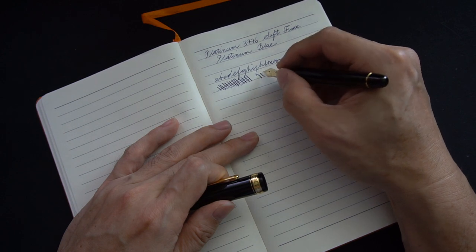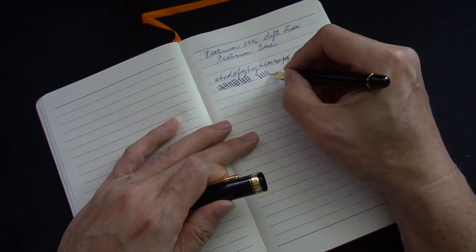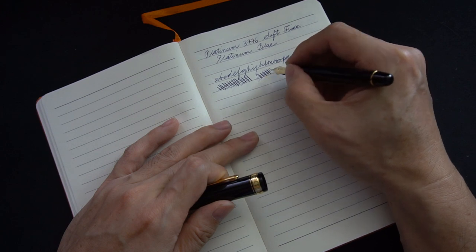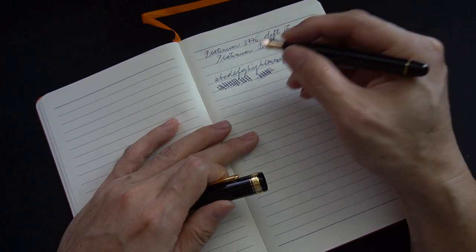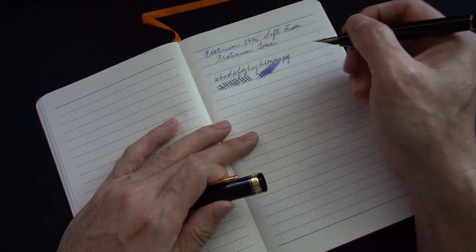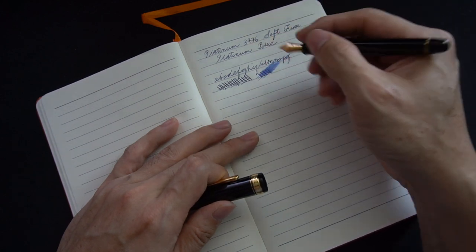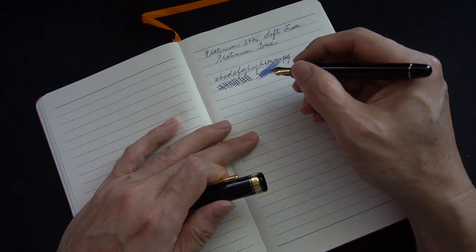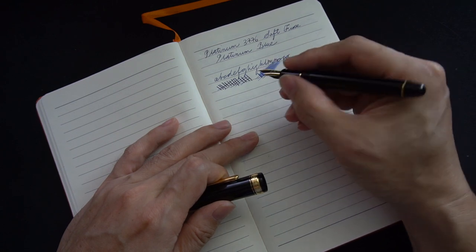So it flexes this way, I'm not sure that you can see on the camera, and this way it's fine. I mean moderately wet. Just inked it, so take it as what you will.